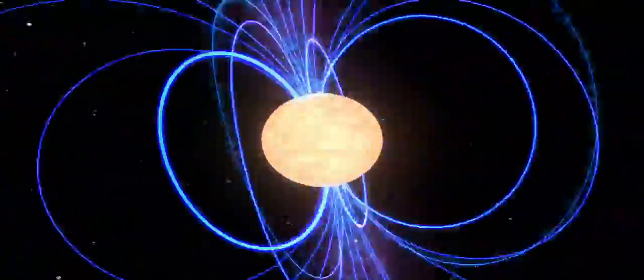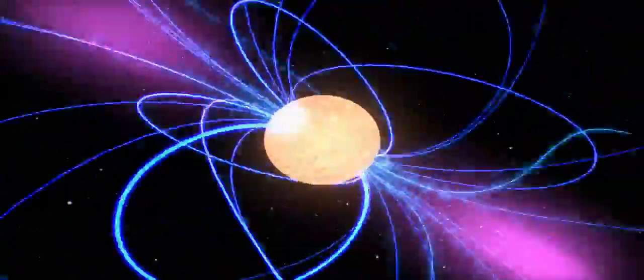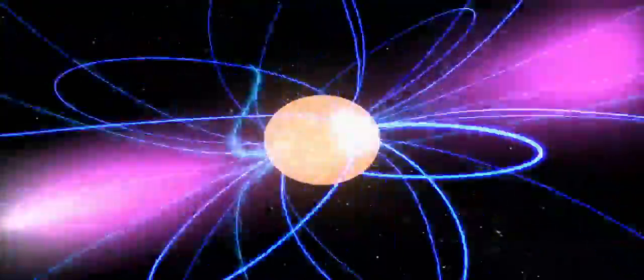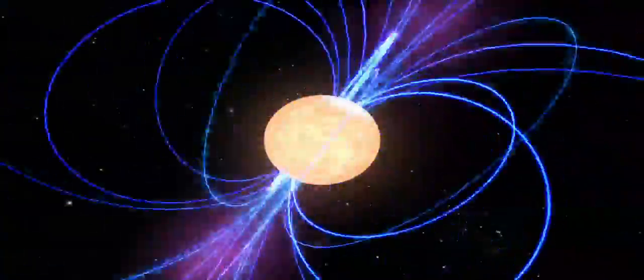Although we don't know all of the details, pulsars emit lighthouse-like beams of radiation. When a beam sweeps past us, we see the emission spike, or pulse, hence the name. This animation of LAT images shows the on-again, off-again nature of the Vela pulsar. Its gamma rays actually cycle about 20 times faster than shown here.